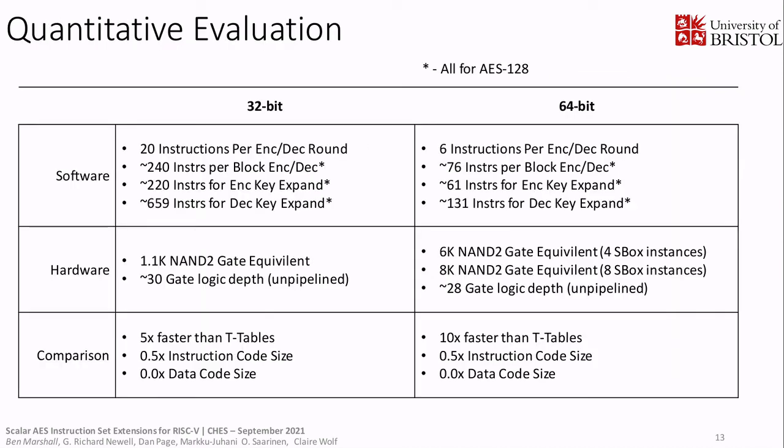In terms of our evaluation — and I apologize, it's a busy slide — the headlines are that we're between five and ten times faster than software t-tables, we eliminate all data table memory requirements, the hardware cost is very modest, and we're a fair bit faster overall. Please do pause and take all of this in.